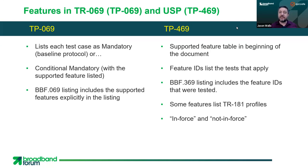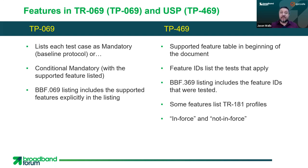For TP469, there's a supported feature table at the beginning of the test plan with feature IDs associated with everything. Those feature IDs end up being listed in your certification. Some of those feature IDs reference certain TR-181 profiles to make it easier — you have to support that profile in order to do those tests. For TP469, there are also some tests that are 'not in force,' meaning we haven't had a product that supports them go through the beta program yet. Those test cases aren't part of the certification program yet, but you can still do them, and we encourage it because then we can put them in force.